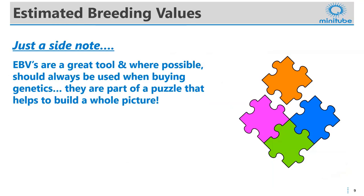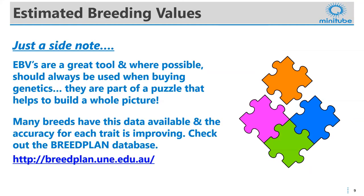Just before moving on, I want to make a note on estimated breeding values. EBVs are an absolutely fantastic tool when buying in new genetics — many breeds have these available now. They do form part of a puzzle made up of physical inspection, the EBVs of the animal, and your goals. So they're not the only thing to consider, but they are high on that list. The accuracy is improving for many traits and new traits are being added. There's a link to the Breed Plan website if you want to look at your particular breed, and that website has been recently updated.